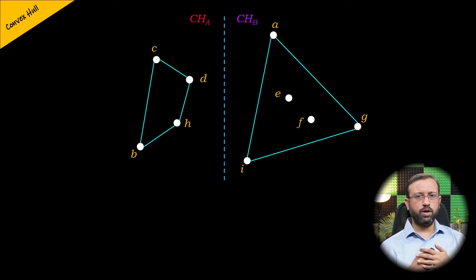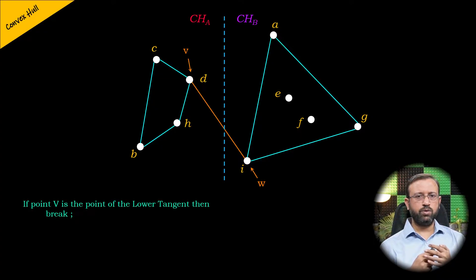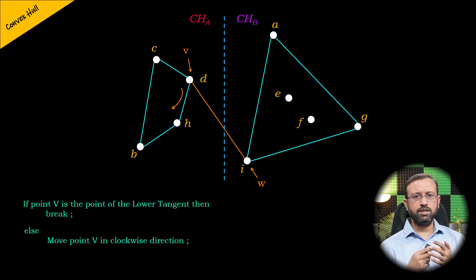We start with the rightmost point from the left convex hull — let us call this point V. Then we consider the leftmost point from the right convex hull — let us call this point W. We check if the point V of the line segment VW in the left convex hull is the point for the lower tangent. If so, V will stop. Otherwise, we move point V clockwise. In this case, the point V of the line segment VW is not the point for the lower tangent because it's not the lowest point in the left convex hull.